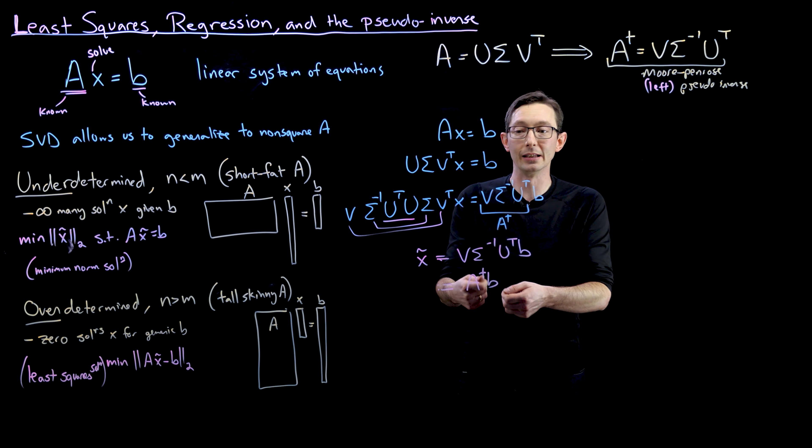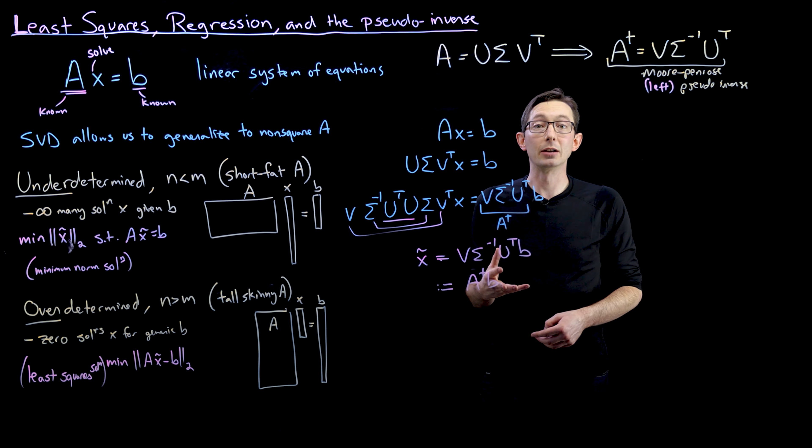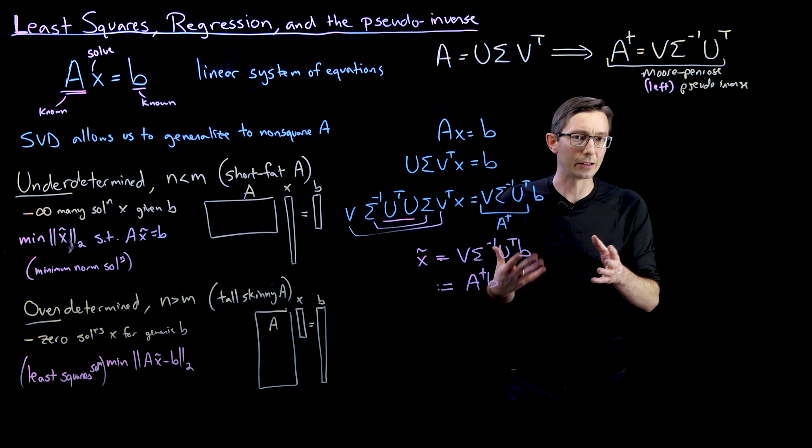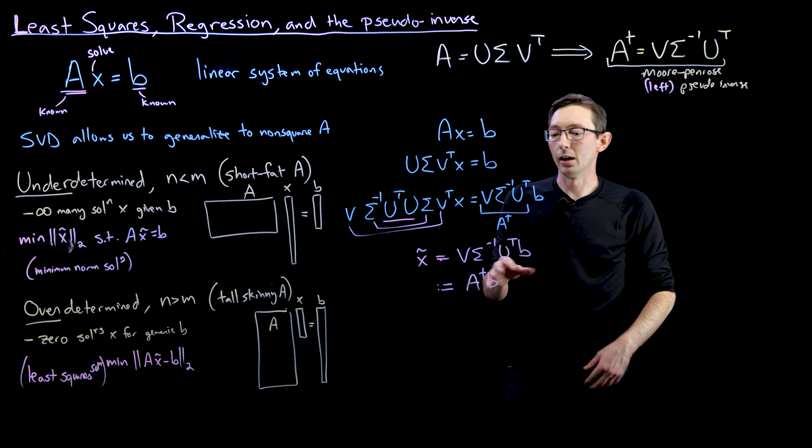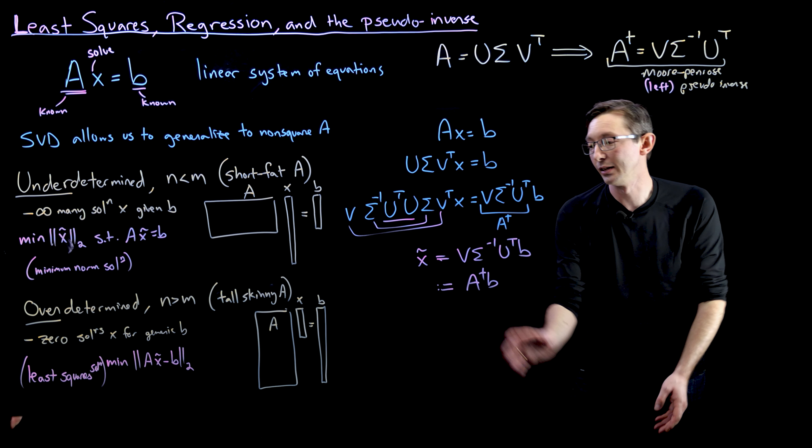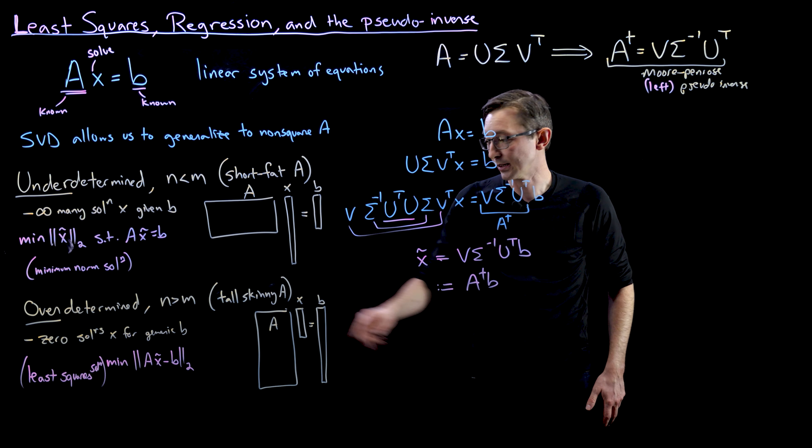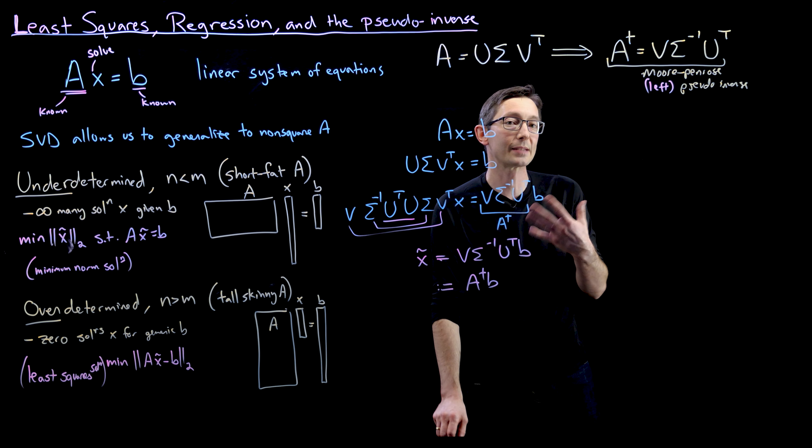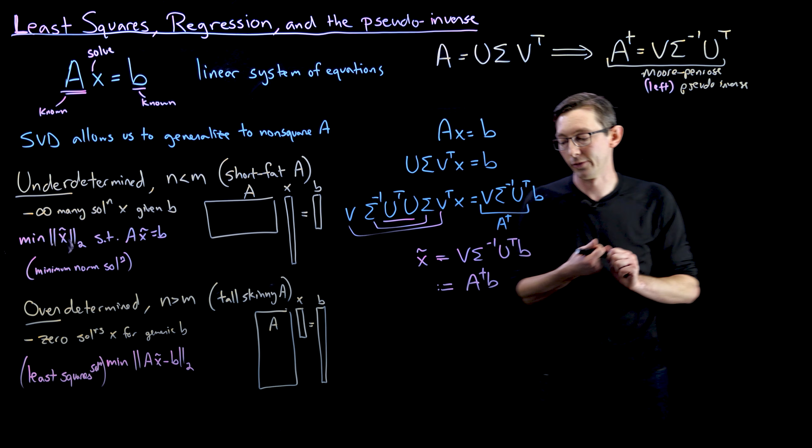So I wanted to walk you through what that looks like and show you where the error crops up in the overdetermined case of this least squares solution, where we don't expect to find an exact solution of our equations.